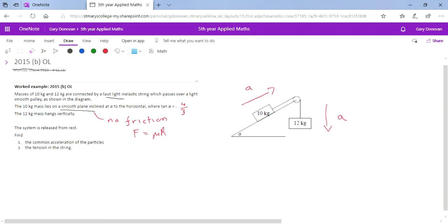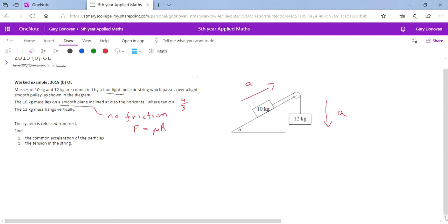The next thing we have to do, like we always do, is look at the force diagrams for each one. The 12 kg particle is fairly easy to do the force diagram. It's going to be pulled down by its weight, which is its mass, 12, times gravity g, and the only force pulling it up is the tension of the string.